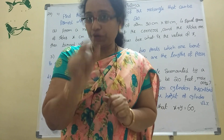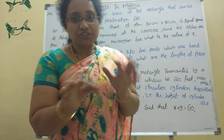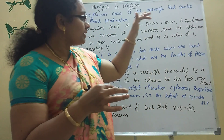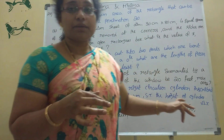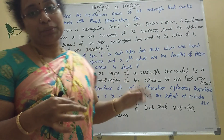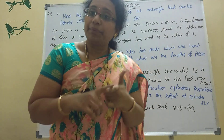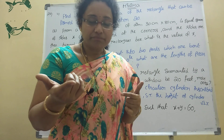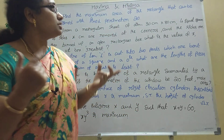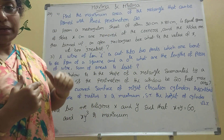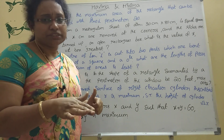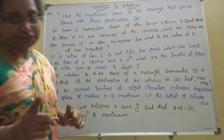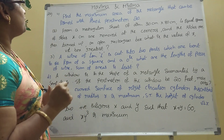Today I am explaining the 1B topic — chapter 24, Maximum and Minima. I am telling here only 6 sums; from these 6 sums, one problem will definitely come in the exam for both AP and Telangana. Maximum and Minima is compulsory — one question, 7 marks.